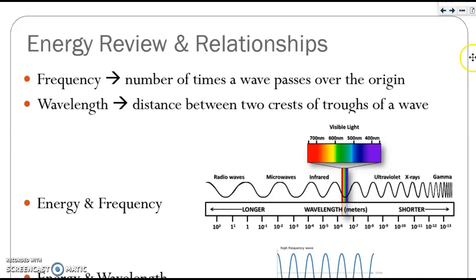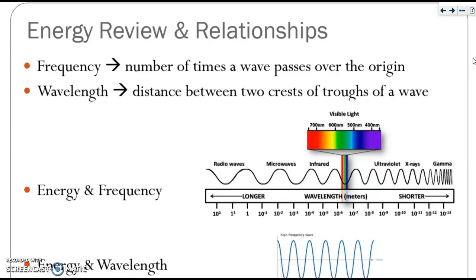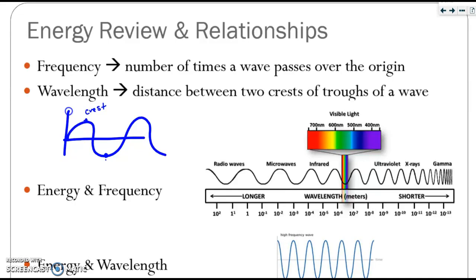Let's begin with a quick review of energy and the relationships that exist. Frequency is defined as the number of times a wave passes over the origin. Wavelength is the distance between two crests, or troughs, of a wave. Here is an example of a wave — the crest is here, and the trough is here. From one crest to the next would be the wavelength of the wave.